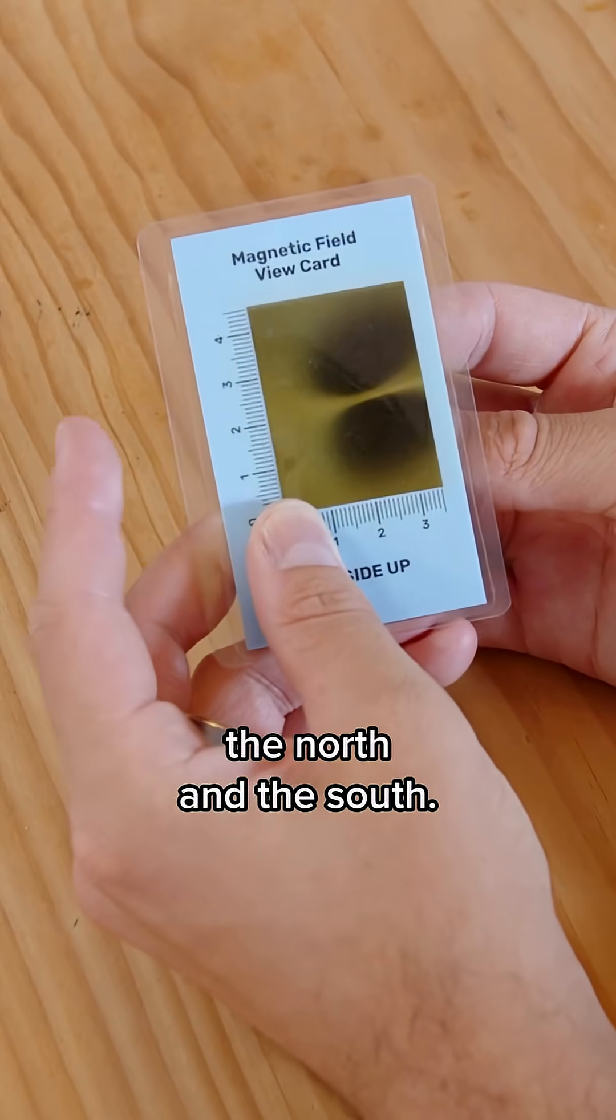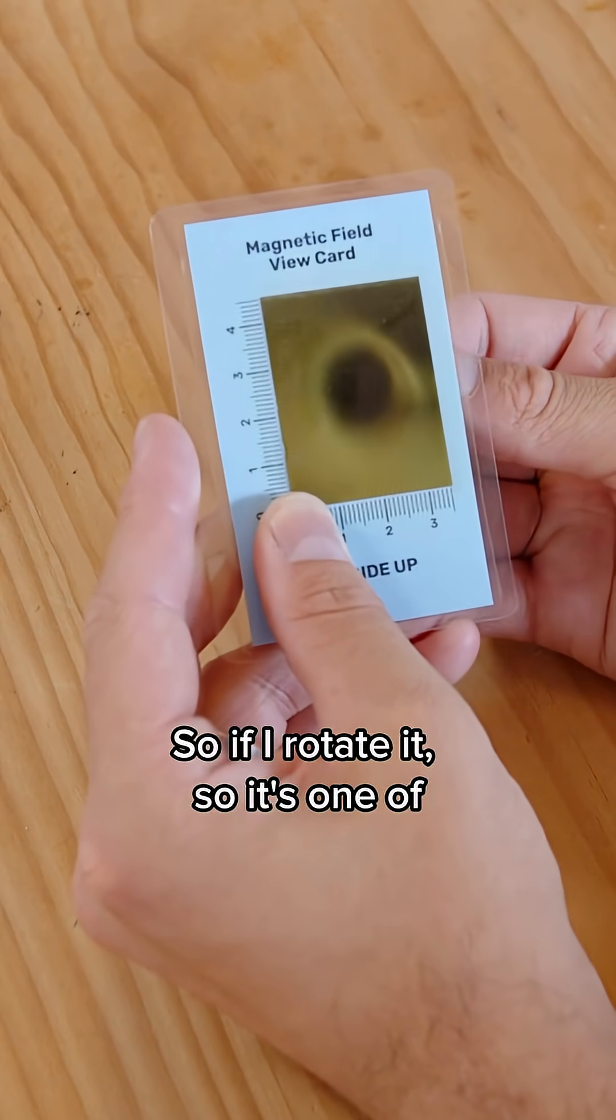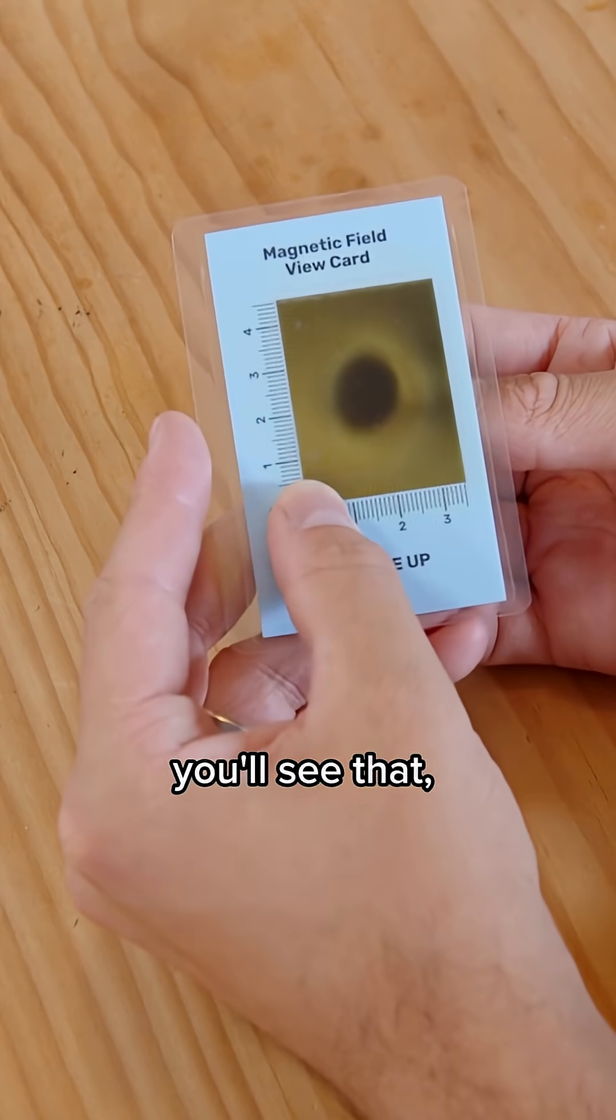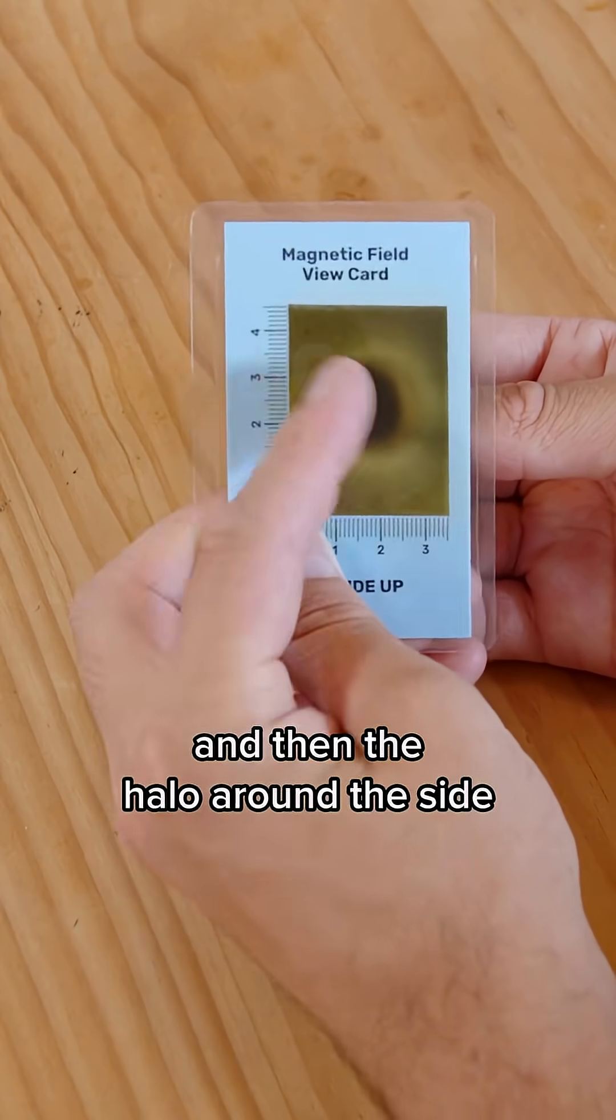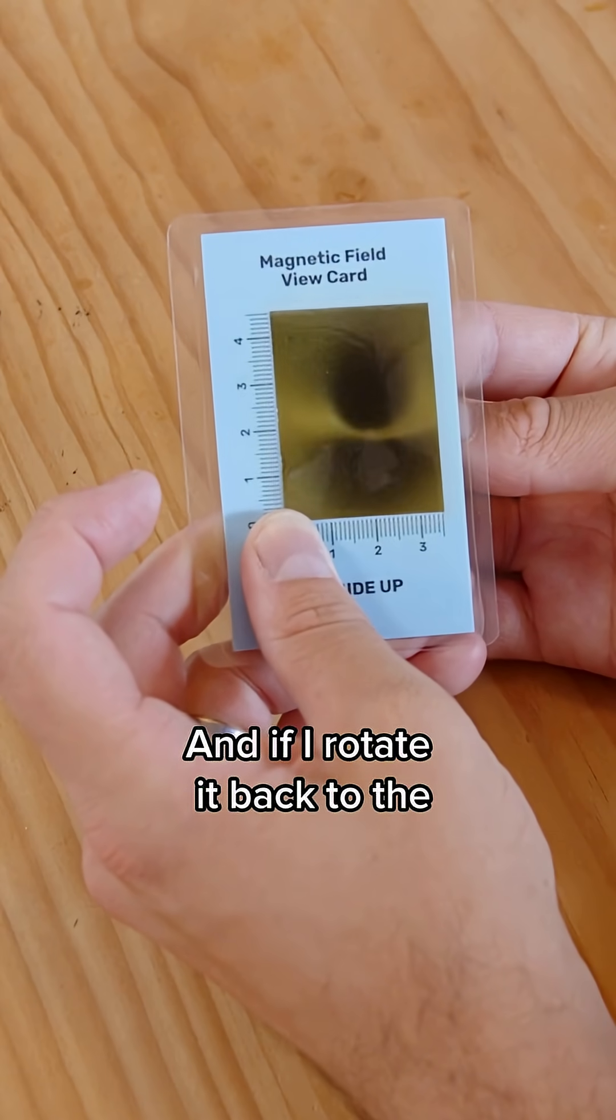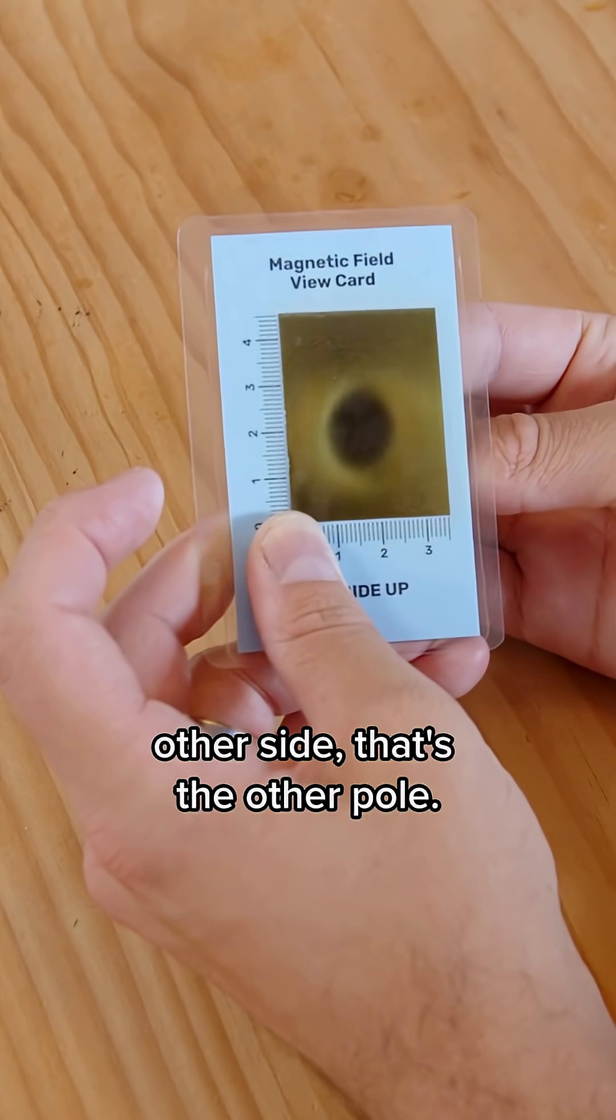Now that's the separation between the north and the south so if I rotate it so one of the poles is facing directly up you'll see the dark part and then the halo around the side that we've seen before and if I rotate it back to the other side that's the other pole.